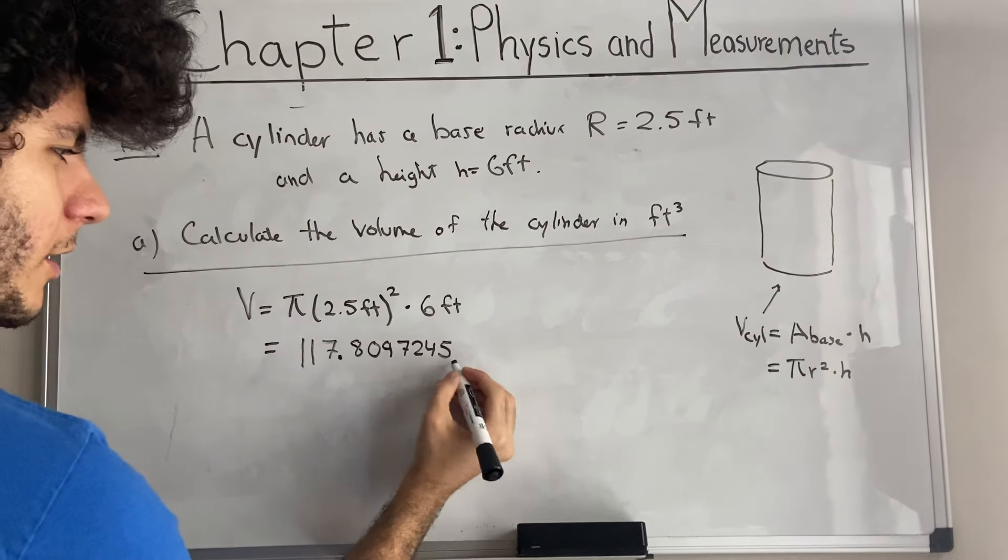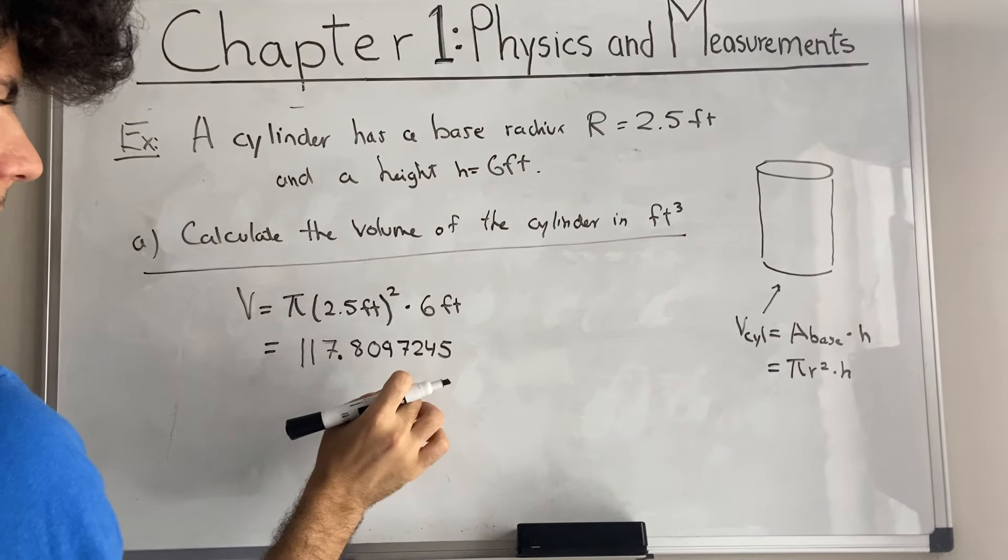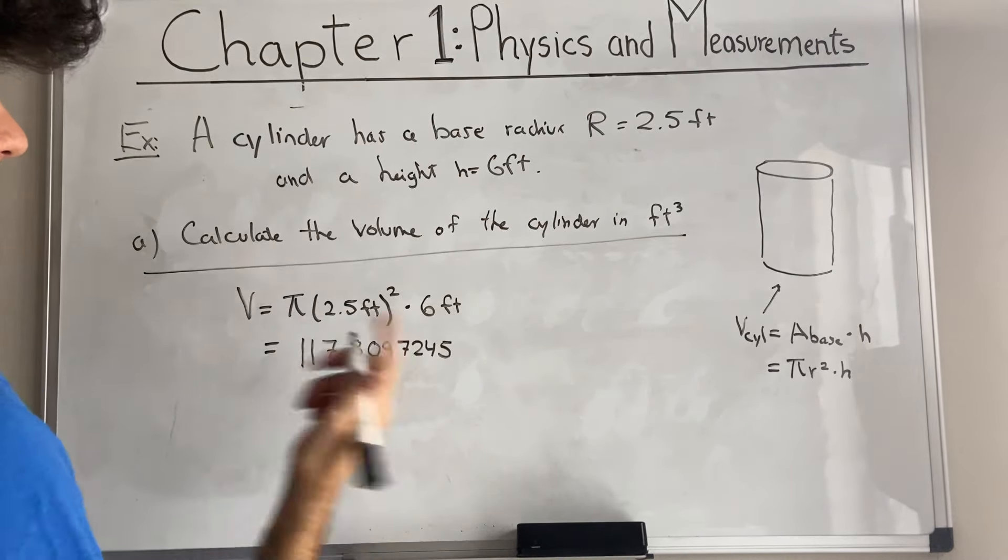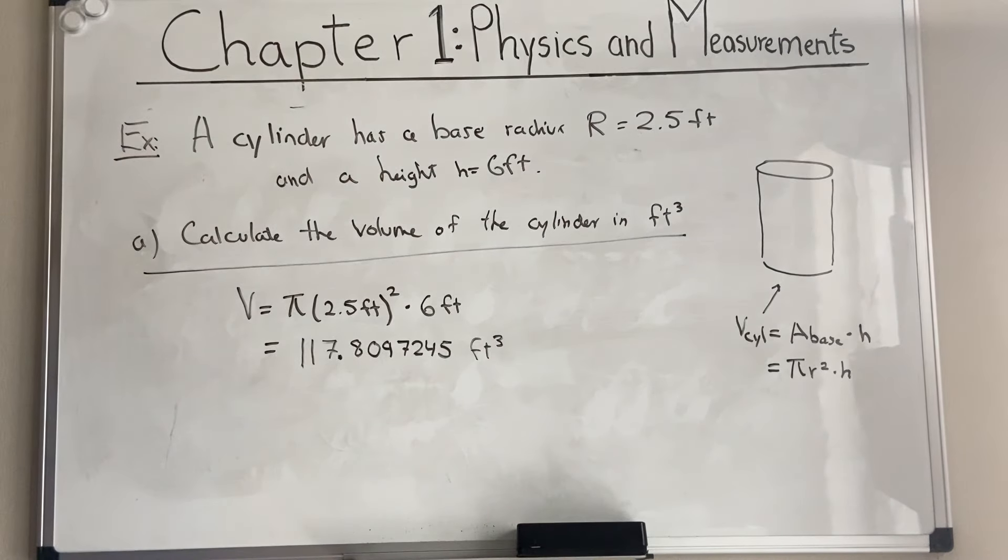What about the units though? They are asking for feet cubed. Well, here we have feet squared times feet. And what do you know? That's feet cubed. Wow, that's great. Okay, so we have our answer. Now, the next question is asking us to convert the volume to SI units.